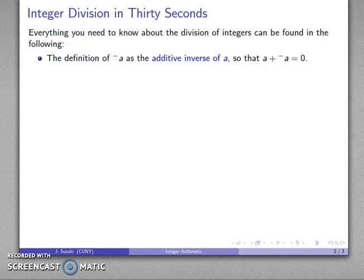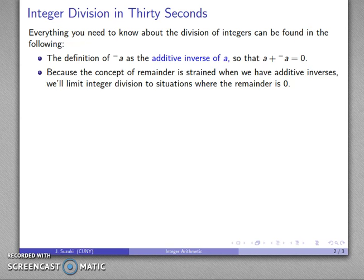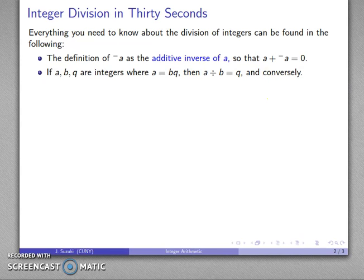Namely that A plus the additive inverse of A gives you zero. And we would like to extend our notion of division to division of integers, but the concept of remainder gets a little bit strange when we're dealing with additive inverses. So what we're going to do then is we're going to focus on the situation where the remainder is zero. And that gives us our special case of division.